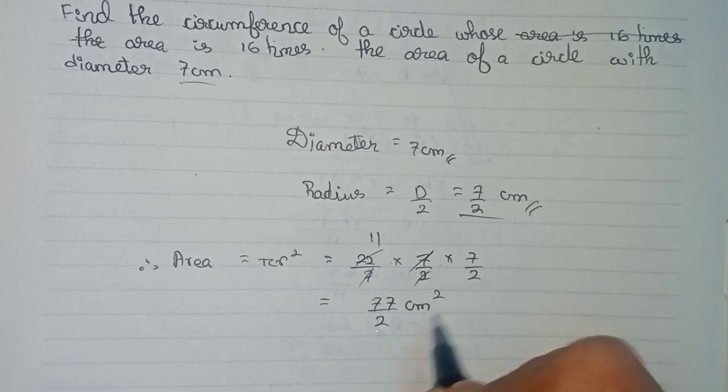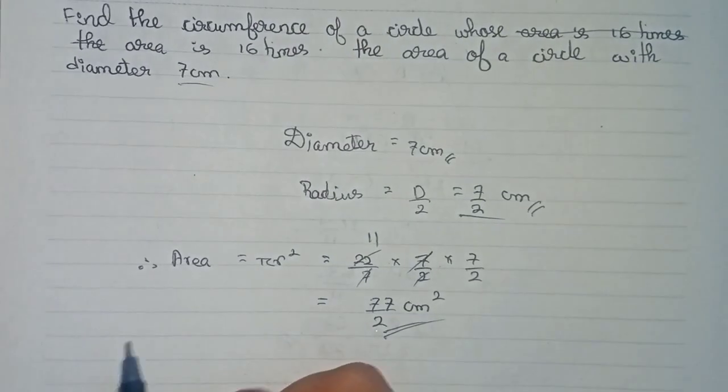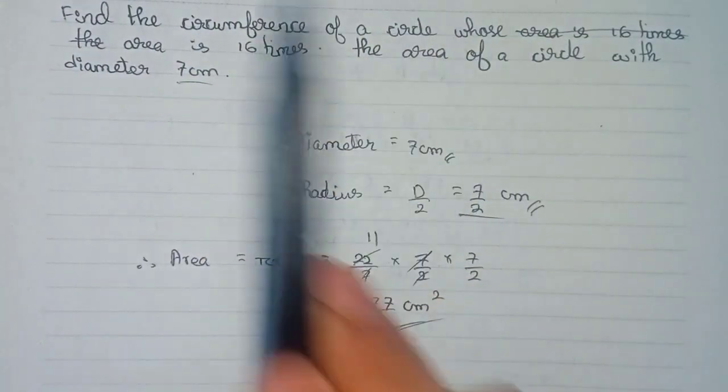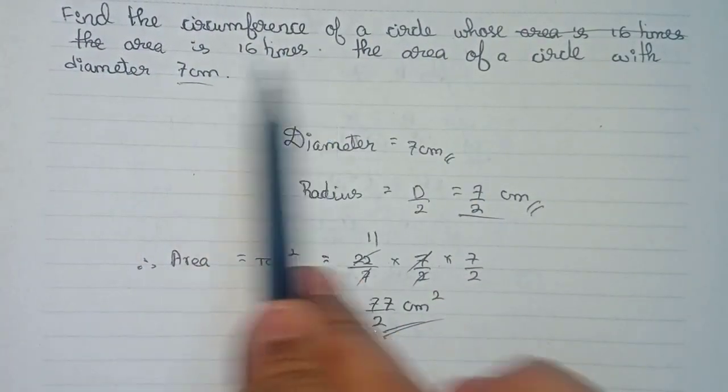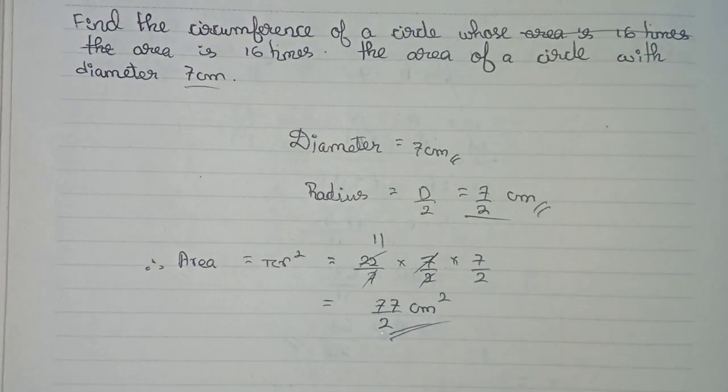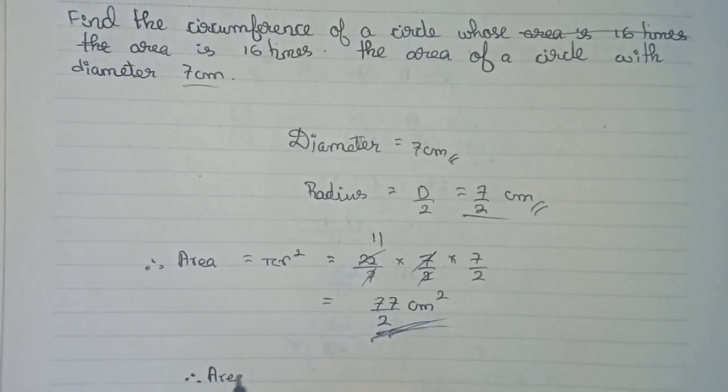Keep it like this as it will be easier to calculate. Now in the question it is mentioned find the circumference of a circle whose area is 16 times, so that means the next circle will be 16 times greater than this circle.